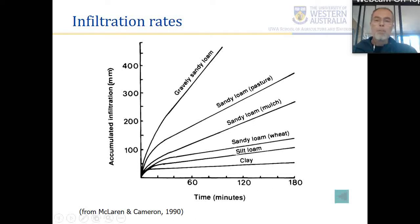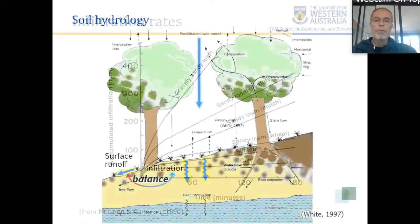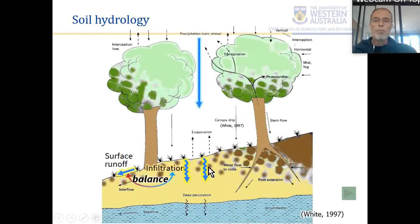Infiltration rates generally decrease to a constant value over time. If this is the amount of infiltration and the horizontal axis is minutes, then the rate — depth per time — is the slope of these lines. This is quite important when we consider our water balance, because the balance between infiltration and runoff is highly dependent on soil texture and structure.